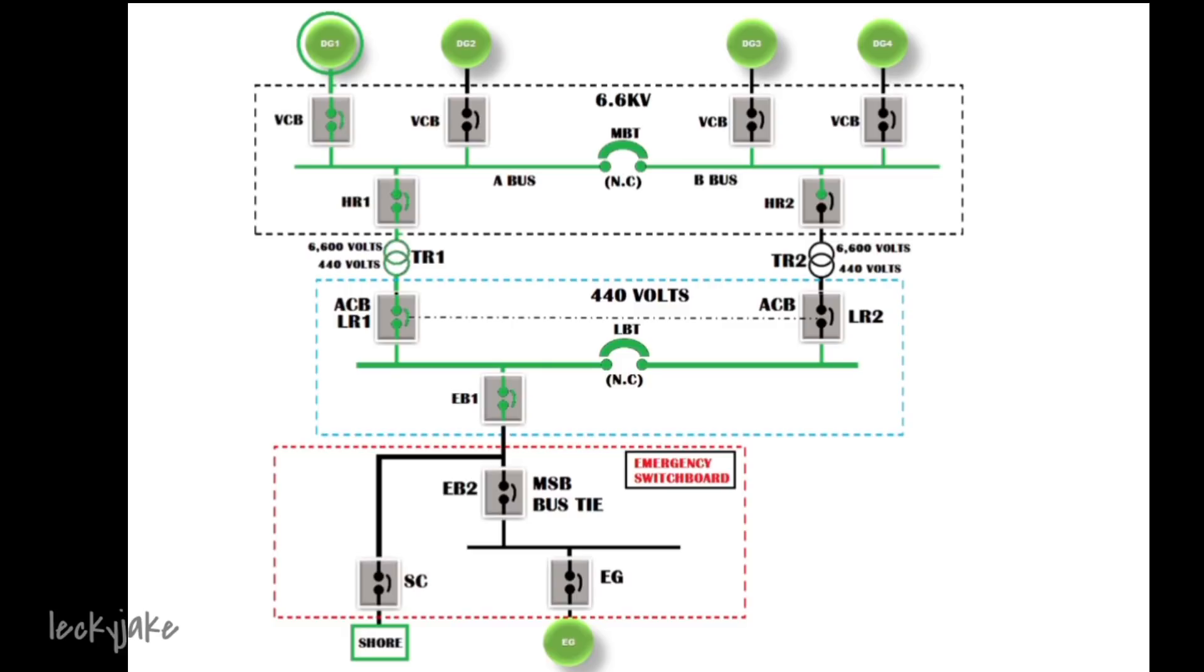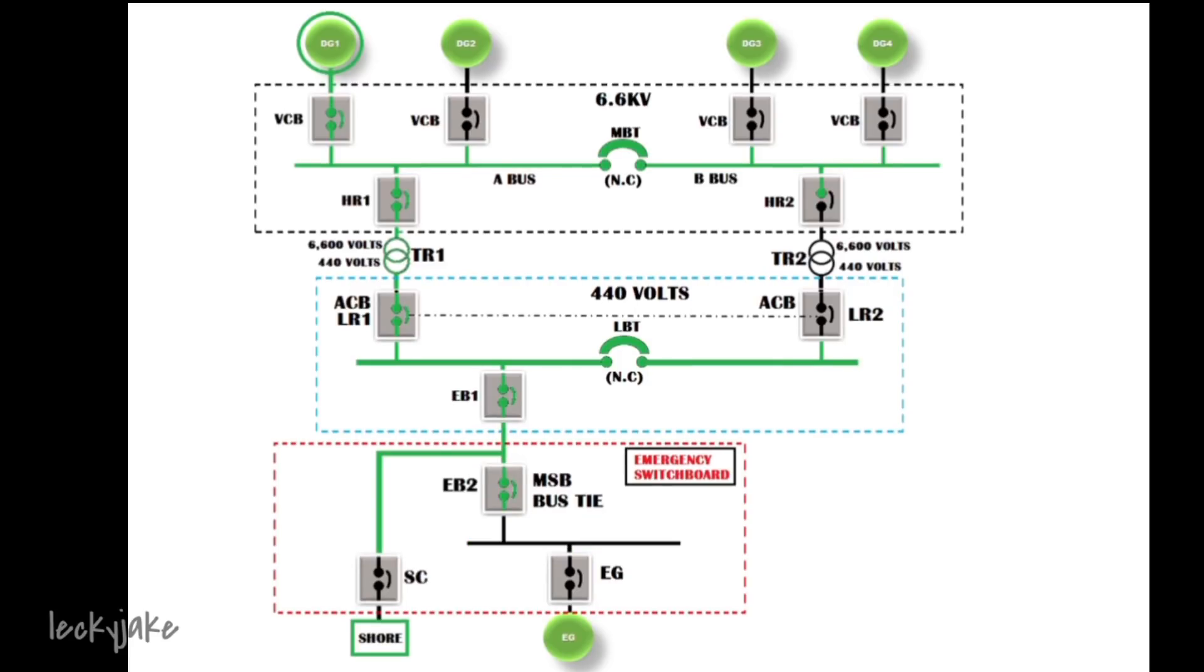And in normal operation, EB1 and EB2 will be in closed position so that we can have a feed on the emergency switchboard. LR1 and LR2 has an interlock with each other that only one of them should be in closed position. Hence the HR2 and LR2 has also interlock with each other. So this means that HR1 and LR1 can only be closed once one of them is closed, and the HR2 and LR2 can be closed once one of them is closed. So in this setup, the HR1 and the HR2 will never be in closed position at the same time.